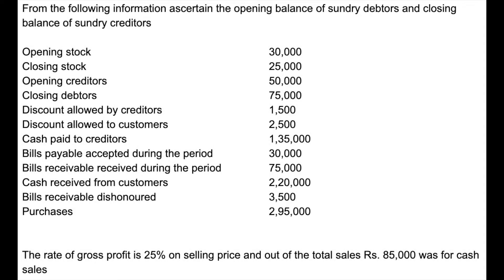Look at this problem: from the following information, ascertain the opening balance of sundry debtors and closing balance of sundry creditors. The information given includes opening stock, closing stock, opening and closing creditors, closing debtors, cash paid to creditors, discount allowed to customers, and other related figures. Extra information: the rate of gross profit is 25% on selling price.